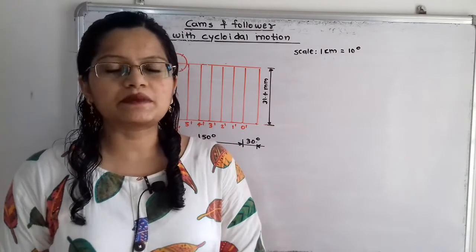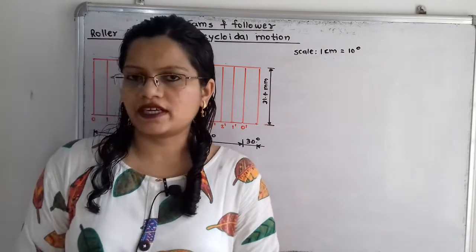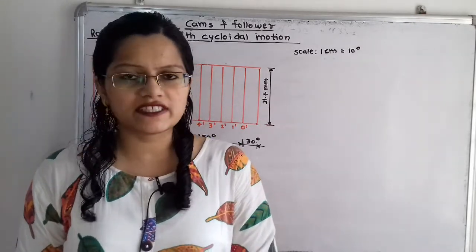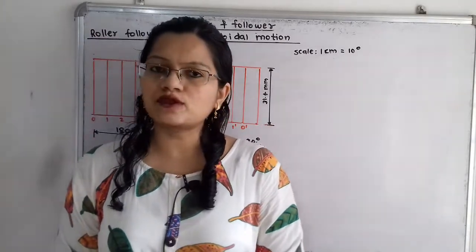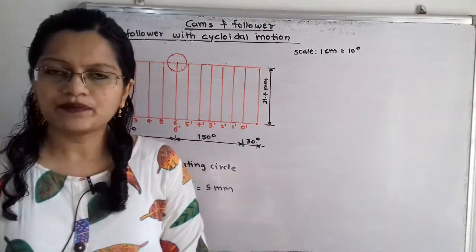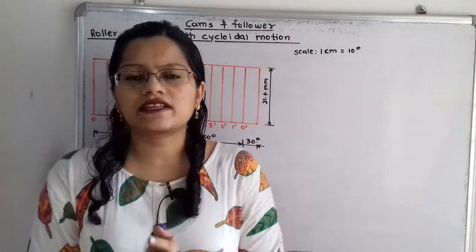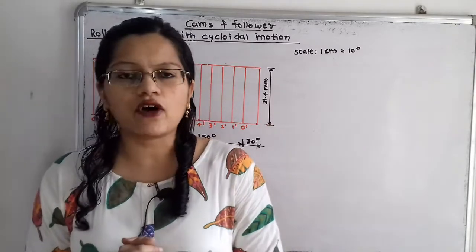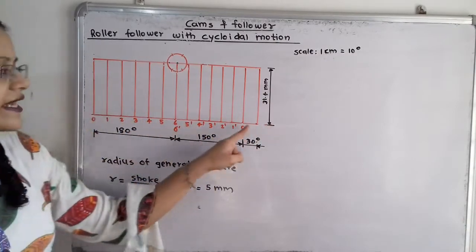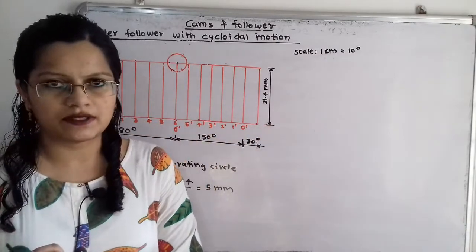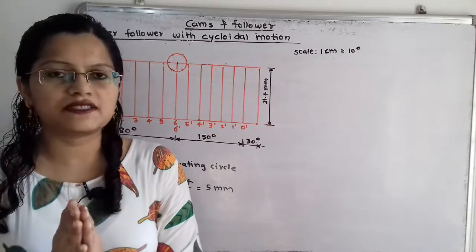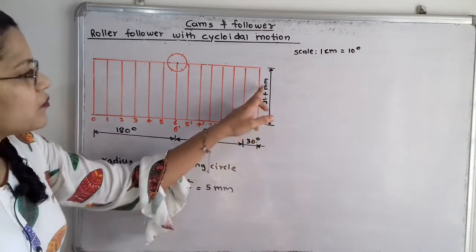We will first draw the displacement diagram as per the given data. During one complete revolution, the cam covers 360 degrees. We will select a suitable scale: 1 cm equals 10 degrees. So for 360 degrees we take a total length of 36 cm on the horizontal axis. The vertical distance equals the stroke, which is 31.4 mm maximum displacement.